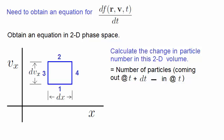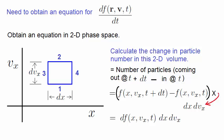Mathematically, this is given by the difference in the distribution functions, as shown, multiplied by the volume of that volume element, dx dv. Because we are dealing with differential quantities, this difference in the distribution function is df. We'll call this the total change in the particle number.